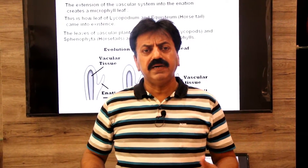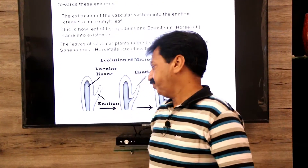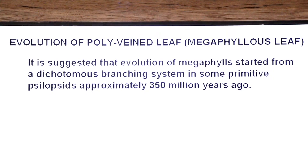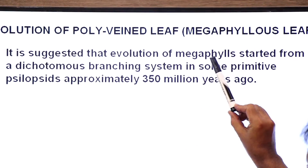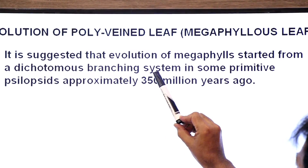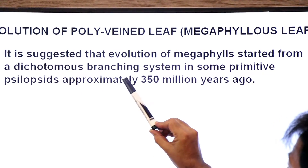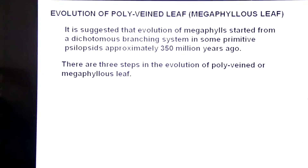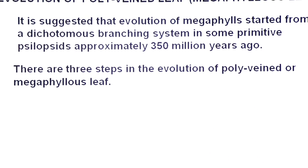After that we come to multiple-vein leaves — the evolution of poly-vein leaves, also called megaphyllous leaves. It is suggested that the evolution of megaphyllous leaves started from a dichotomous branching system in some primitive Psilopsida, approximately 350 million years ago. There are three steps in the evolution of poly-vein or megaphyllous leaves: first, overtopping; second, planation; third, webbing.